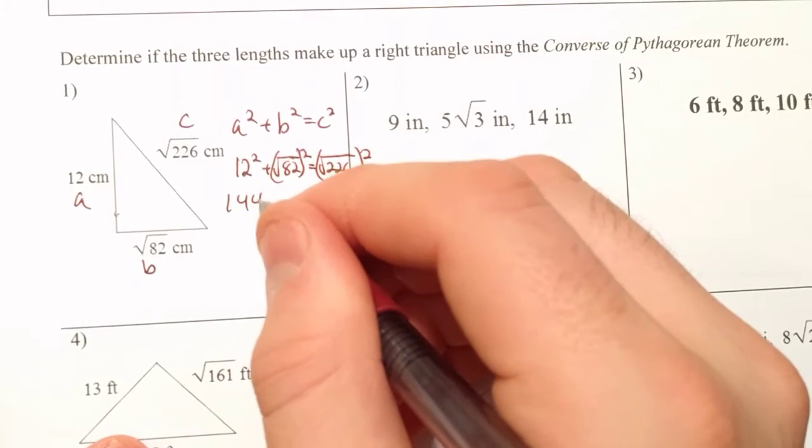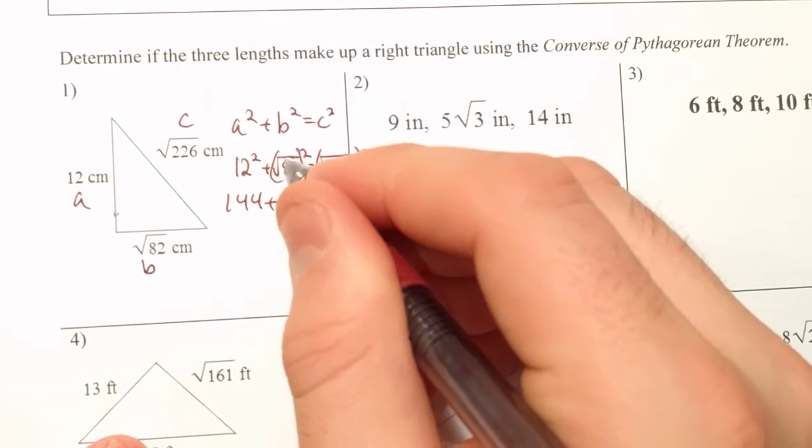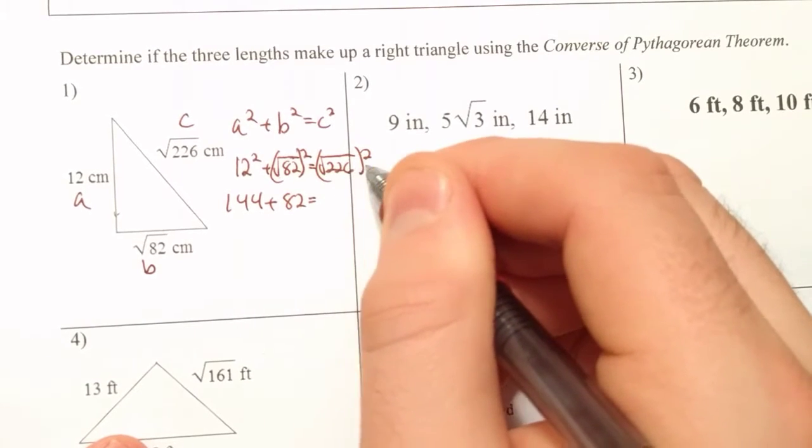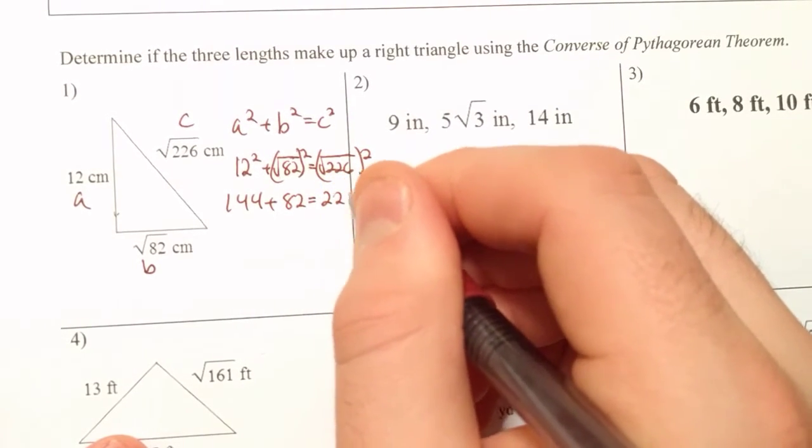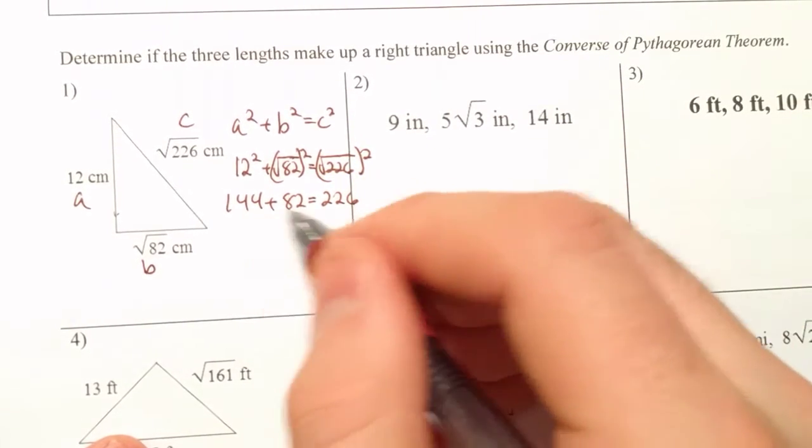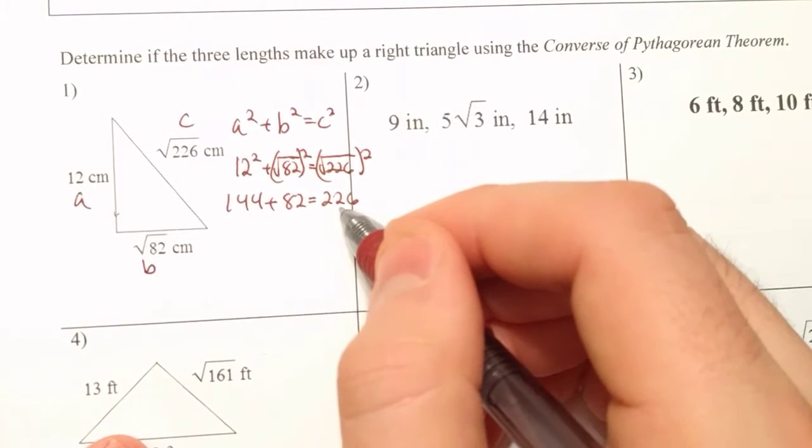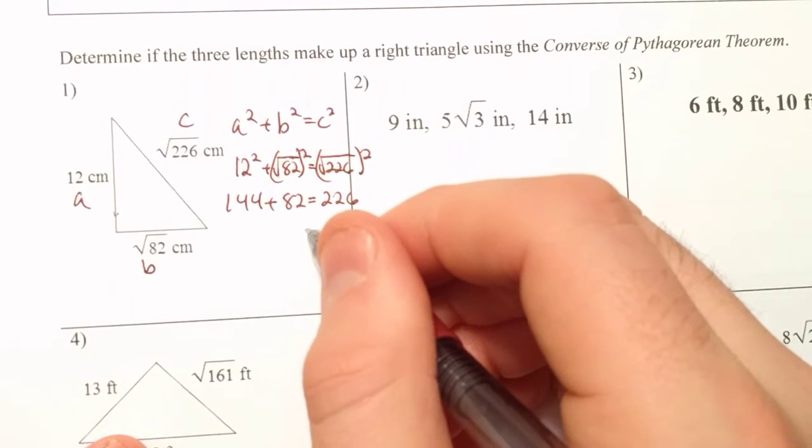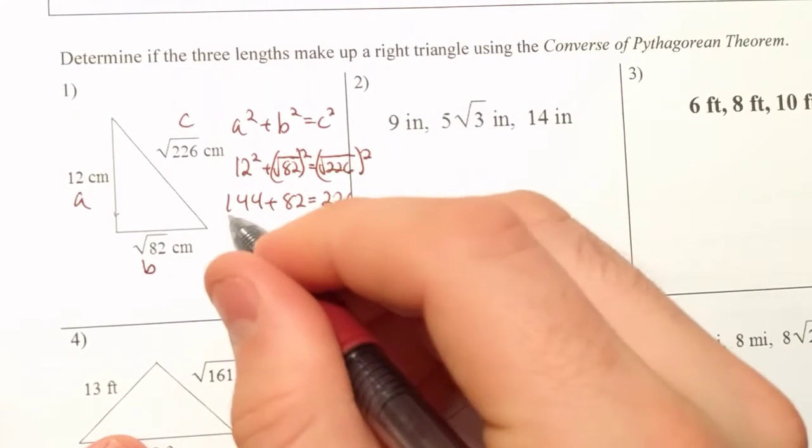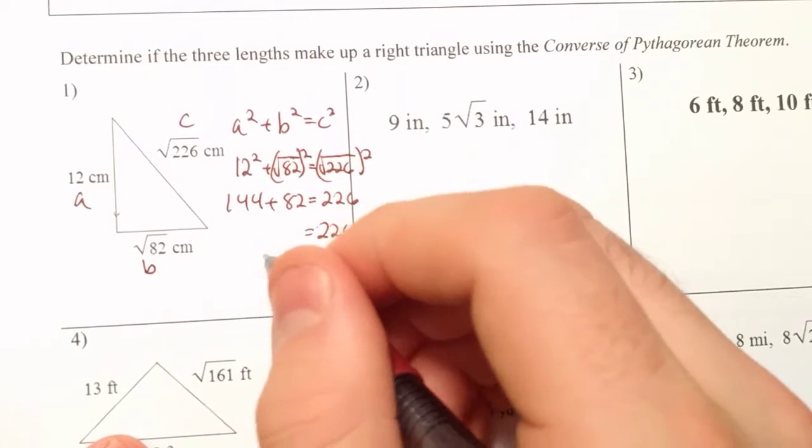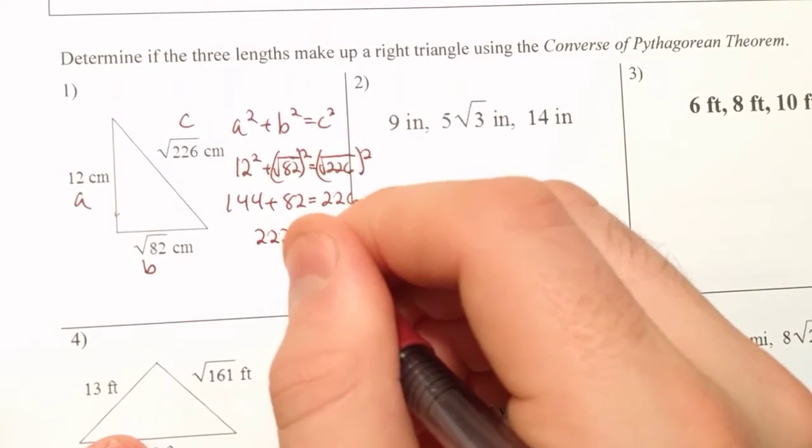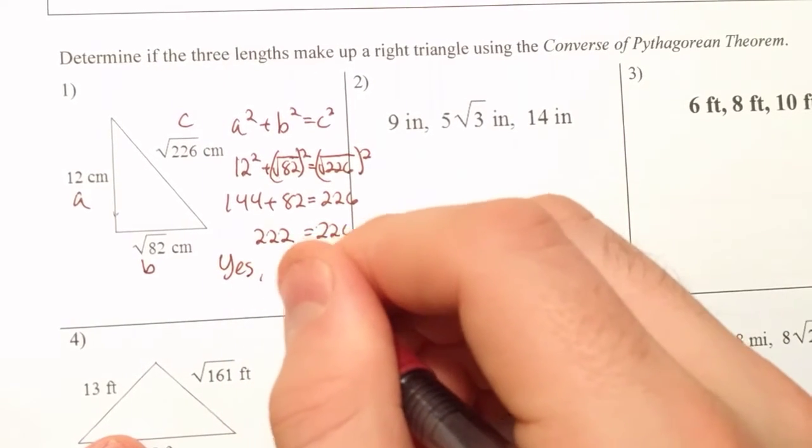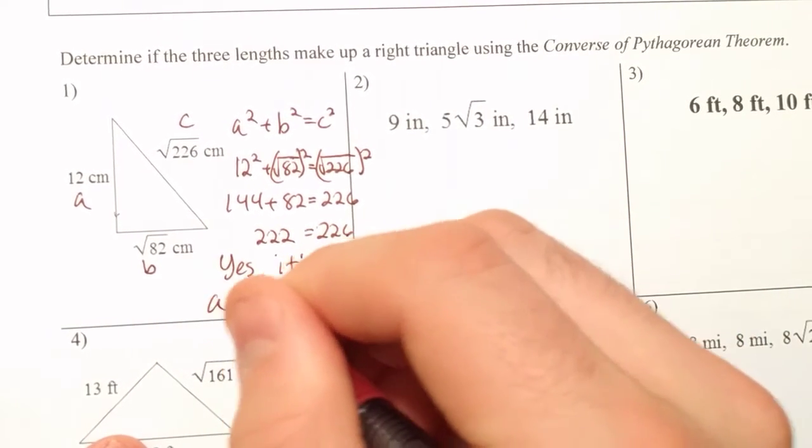12 squared is 144. The square root of 82 squared is going to be 82. And the square root of 226 squared is just 226. So if you add these two numbers together, 144 and 82, if you get 226, this is going to turn out to be a right triangle. And when you type this in your calculator, or calculate it on the side, you do in fact get 226. And because these two sides are equal, it's yes, it's a right triangle.